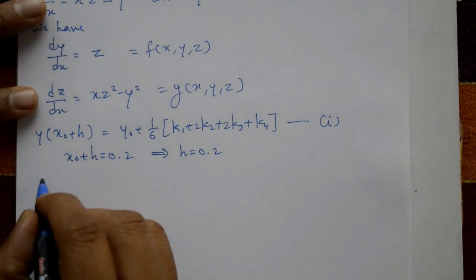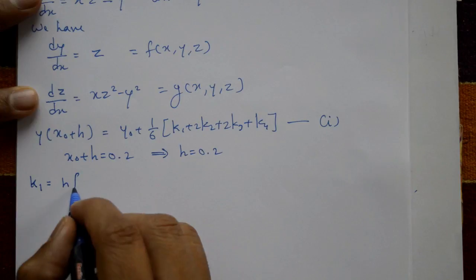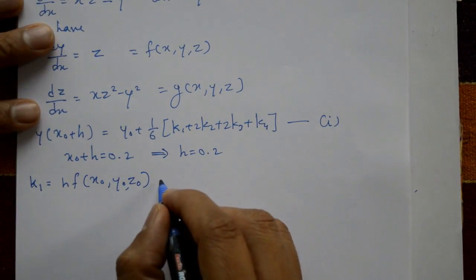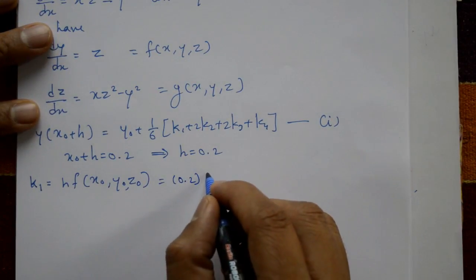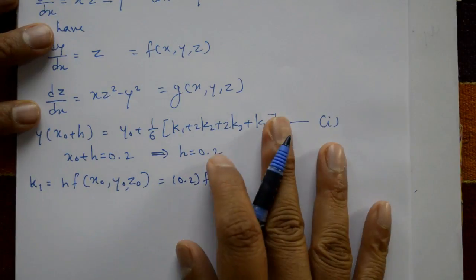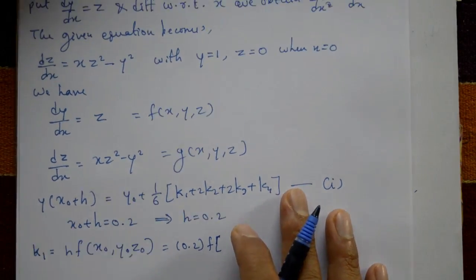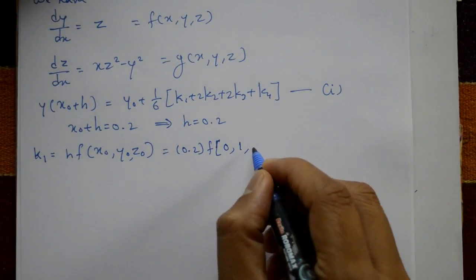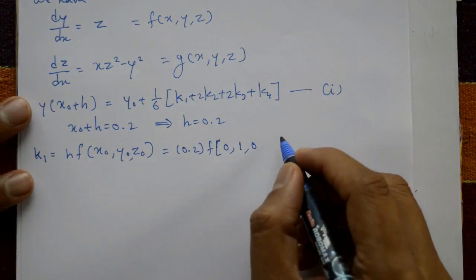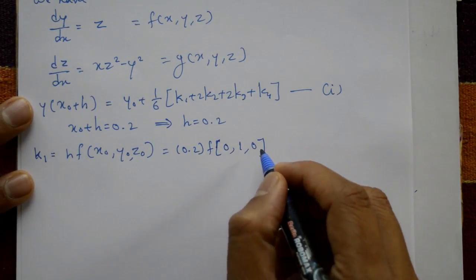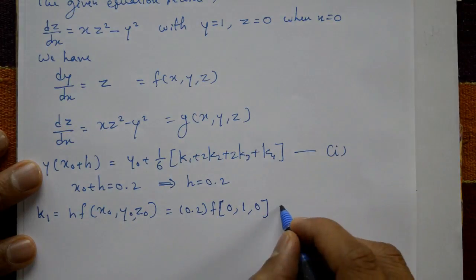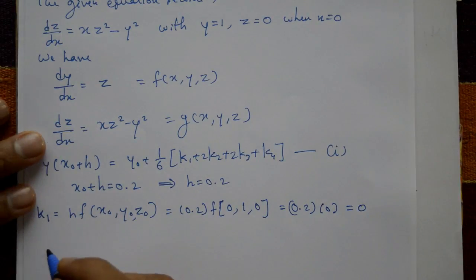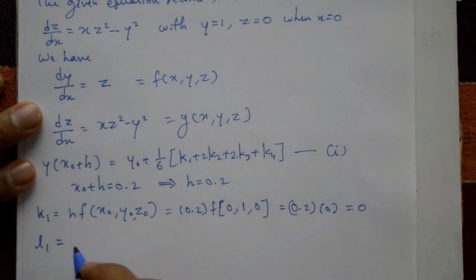k1 = h·f(x₀, y₀, z₀). Here h = 0.2, x₀ = 0, y₀ = 1, z₀ = 0. Since f(x, y, z) = z, we have k1 = 0.2 × 0 = 0.